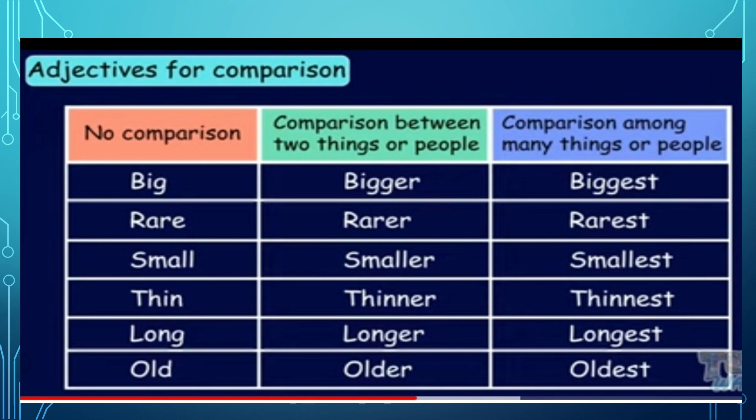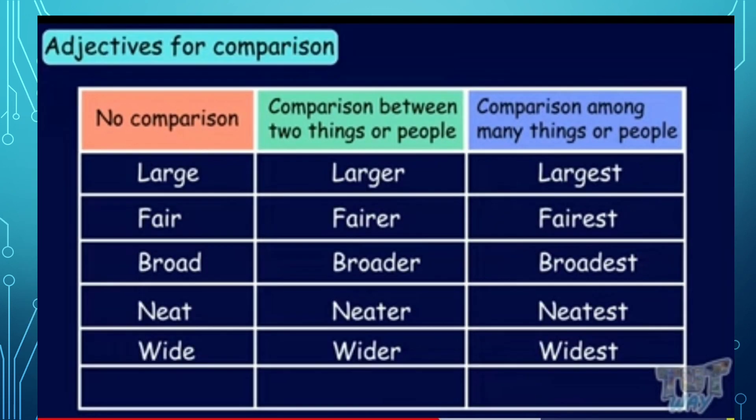Big, bigger, biggest. Big is used for comparison among many things or people. Rare, rarer, rarest. Small, smaller, smallest. Thin, thinner, thinnest. Long, longer, longest. Old, older, oldest. Large, larger, largest. Fair, fairer, fairest. Broad, broader, broadest. Neat, neater, neatest. Wide, wider, widest.